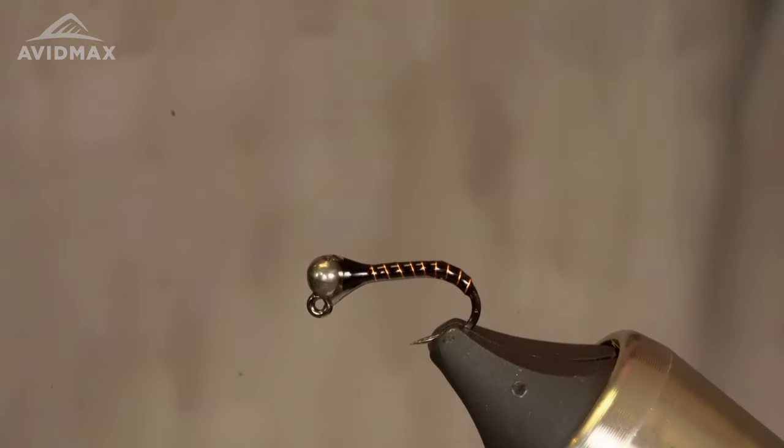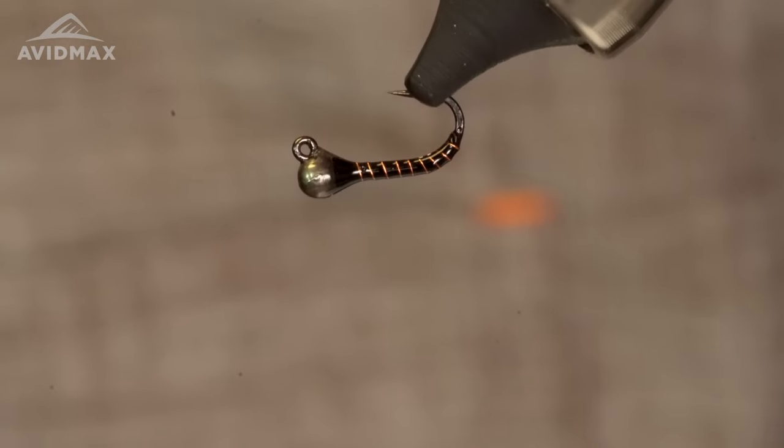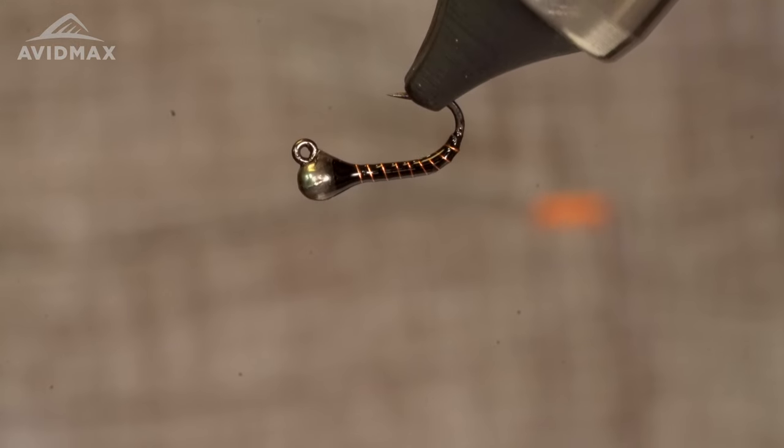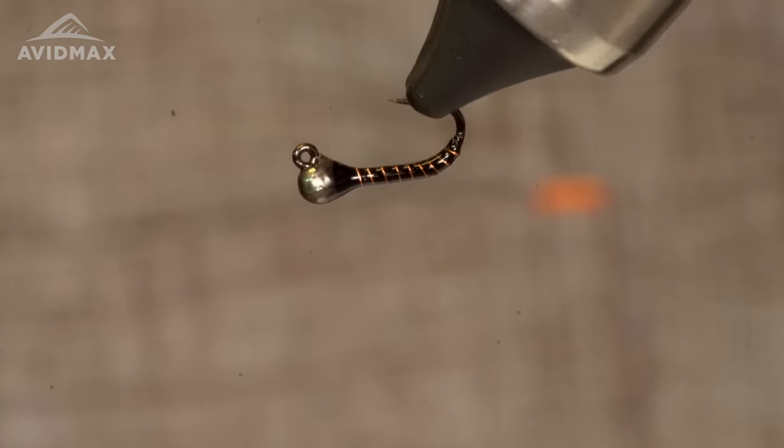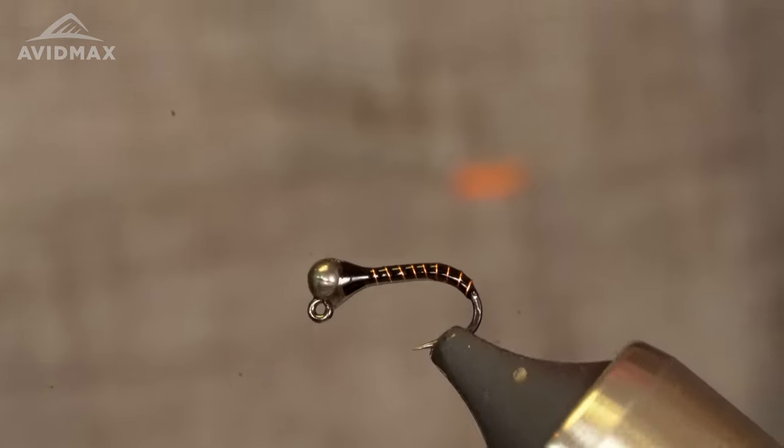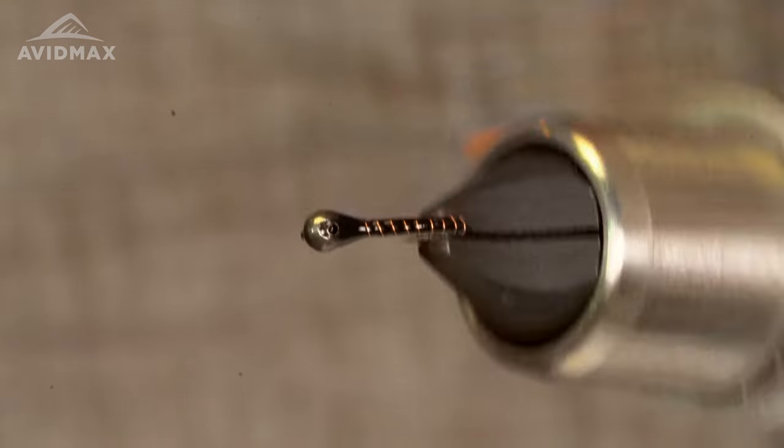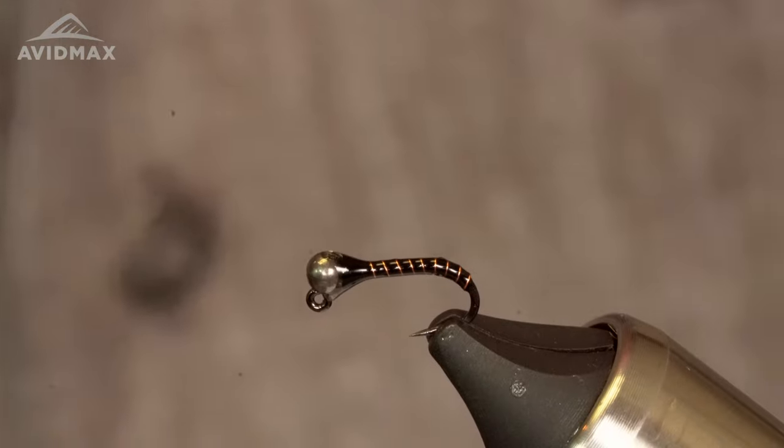And that's it, job's goodin. Jigged zebra midge, nice and slim, good taper on the head. As they say, that fly, a fish, that dog will hunt. So yeah, tie a couple up, you're gonna need them out there. Midges are everywhere, all year round, all the waters.